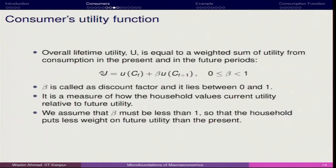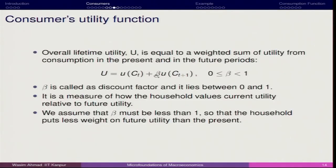Now for the overall lifetime utility, we will be working on the utility function. Unlike the one-period model where we had C alone, here in the two-period model we have U equal to U(Ct) plus beta times U(Ct+1). We maximize this with respect to Ct and Ct+1. Here beta is the behavioral coefficient — it decides how much weight this agent gives to the future relative to the current. If beta is higher, more weightage to the future; if beta is lower, less weightage to the future.